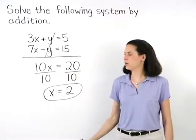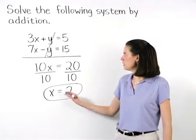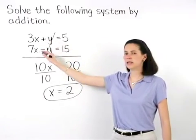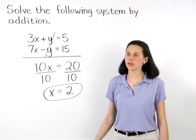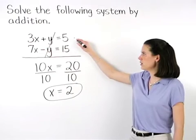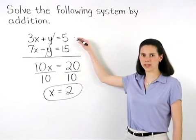To find y, we simply plug a 2 back in for x in either one of our two given equations. So let's go with our first equation, 3x plus y equals 5.